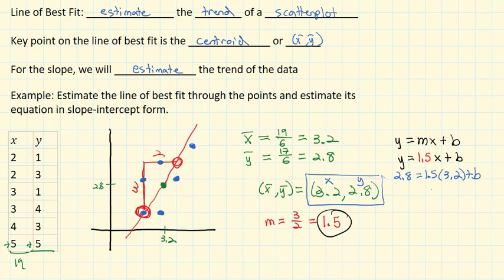To simplify a little bit, we're going to multiply 1.5 times 3.2, and that's going to give us 4.8 plus b. And so to get the b alone, we'll subtract 4.8 from both sides.